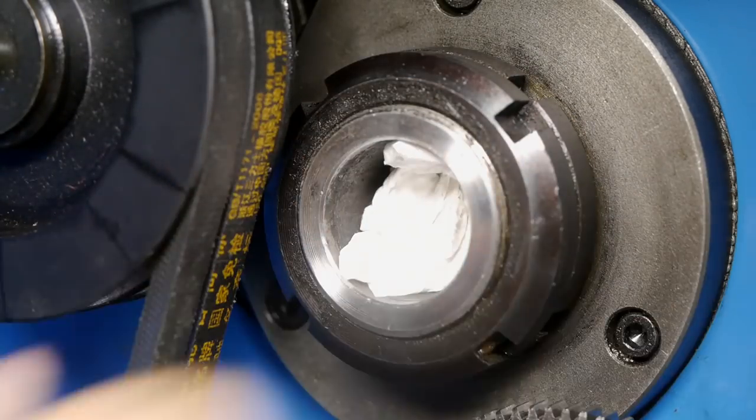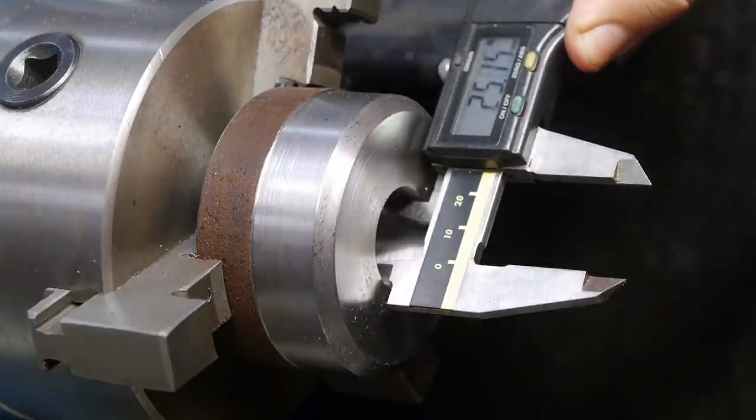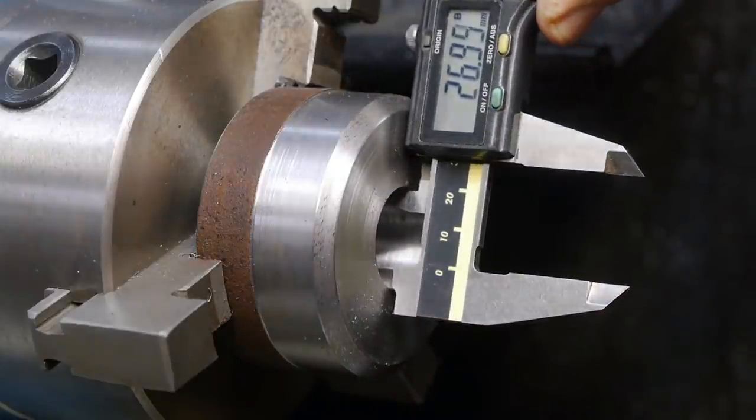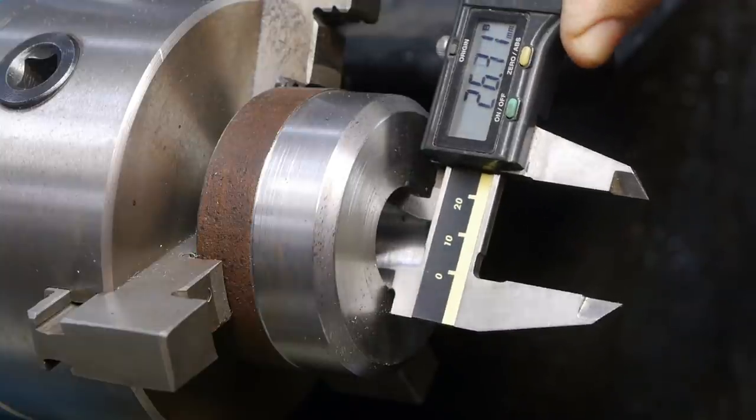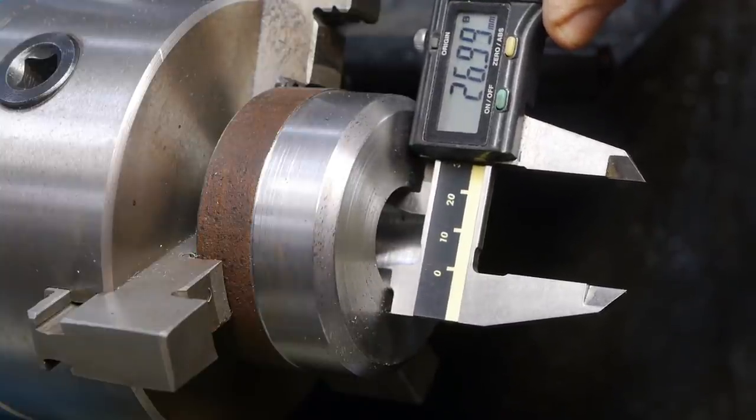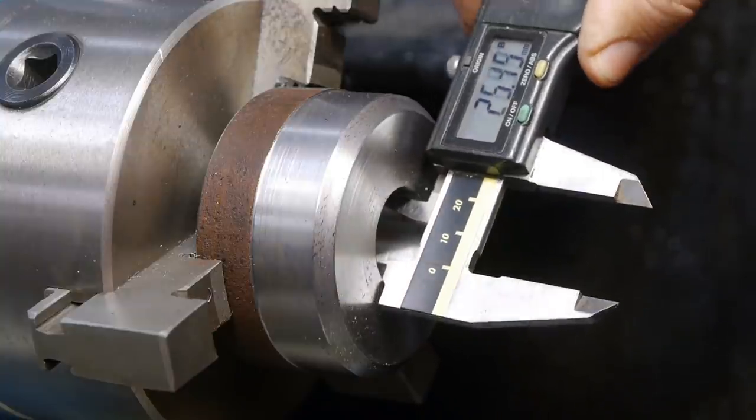I ended up making that bore about 27 millimeter. If it's too small I'll spend ages removing material and the thread will be sharp. If the hole is too big the thread won't be as strong as possible. I just hope I guessed it right.